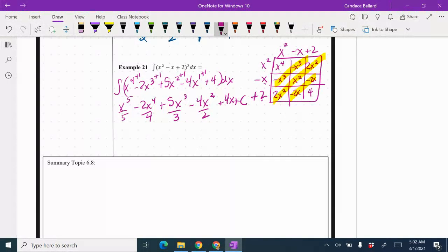I could simplify just a tiny bit. It looks like 2 can go into 4. So x to the fifth over 5 minus x to the fourth over 2 plus 5x cubed over 3. 2 goes into 4 twice. So minus 2x squared plus 4x plus c.